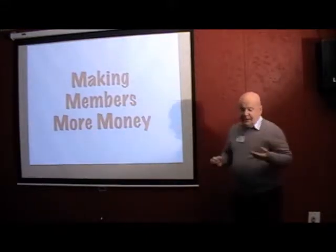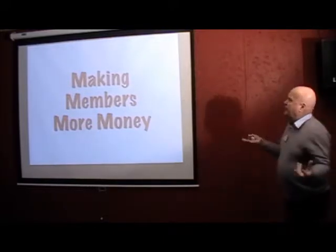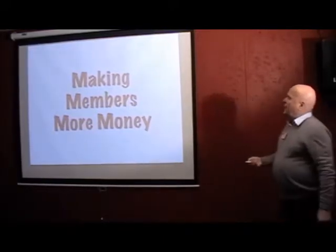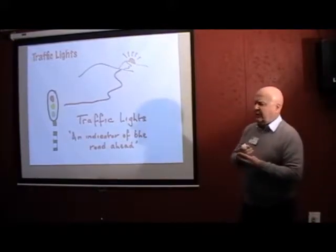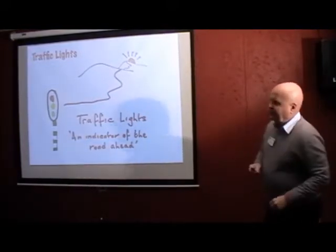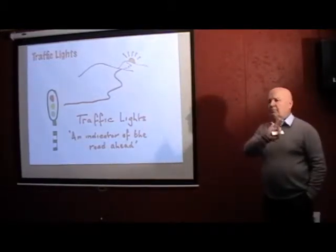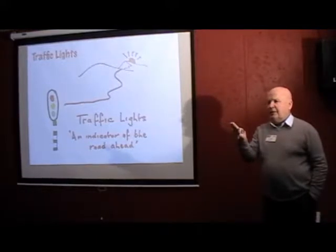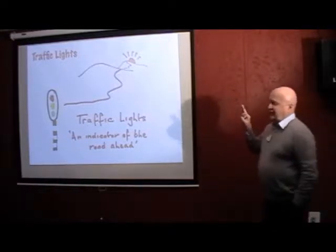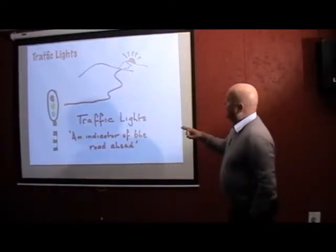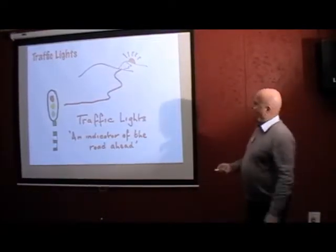The next one I said is making members more money. How do I measure whether the members are making more money? I do it through a system called traffic lights. It's a BNI system that's been in existence for 30 years. And basically the traffic lights measure seven key performance indicators of the chapter against a standard, and they score you. And if you study the traffic lights properly, you'll understand where you are and where you go.